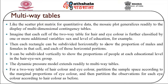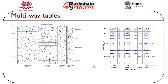The dynamic pressure model extends readily to multi-way tables. For a two-way table of hair color and eye color, partition the sample space according to the marginal proportions of eye color and then partition the observations for each eye color according to the hair color. The eye color is shown in the first table and the hair color in the second table, with horizontal and vertical representations showing both attributes within a single multi-way table.